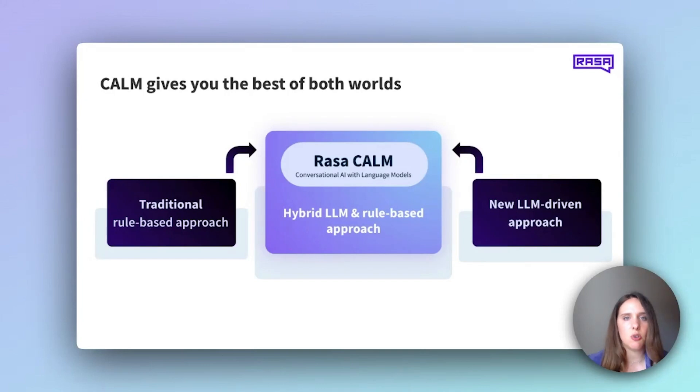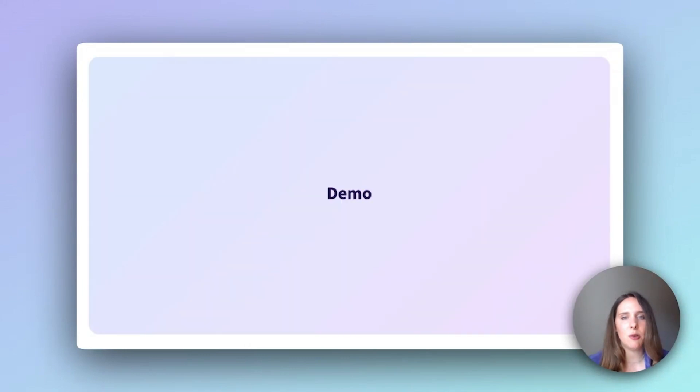I've mentioned language models more than a few times so far, so you might be curious about a language model's role within CALM and how it can be effectively employed. In the following section, I'll demonstrate how these models enhance the dialogue system's ability to understand users, maintain conversational flow, and manage diverse conversational patterns for more fluid interaction with less development effort. To illustrate, we'll delve into a specific use case — the book vacation workflow — and an internal HR and operations chatbot that I'm building here at Rasa. I'll provide a detailed, step-by-step walkthrough of a test conversation with CALM, showcasing its capabilities in action.